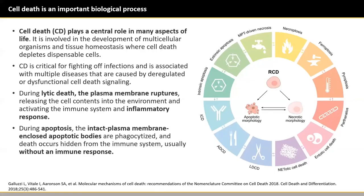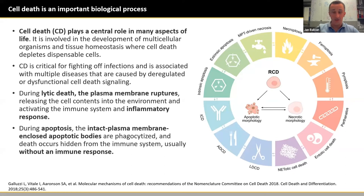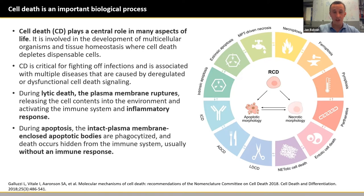During apoptosis — a non-lytic type of cell death — the cell disintegrates into apoptotic bodies, which are still engulfed by intact plasma membranes. The cell death occurs hidden from the immune system, usually without an immune response. Individual types of cell death are associated with typical biochemical processes, which change the morphological or biophysical properties of dying cells. The cell death processes are reflected in changes of dynamics at the liquid-liquid phase interface, and that's the reason we chose quantitative phase imaging.